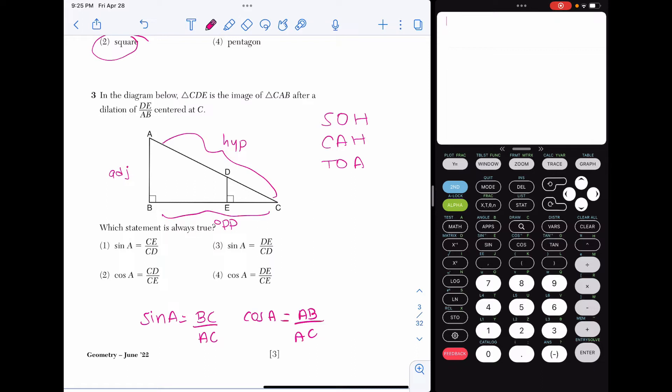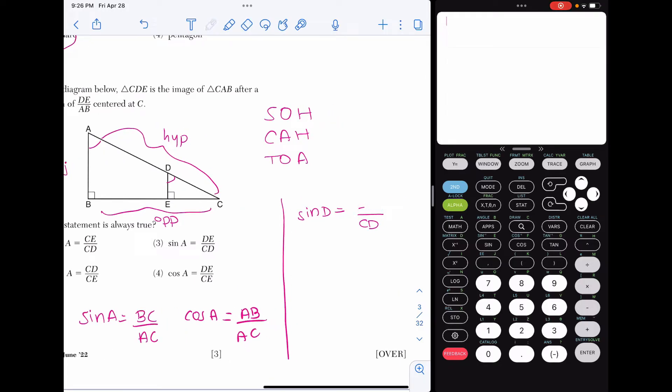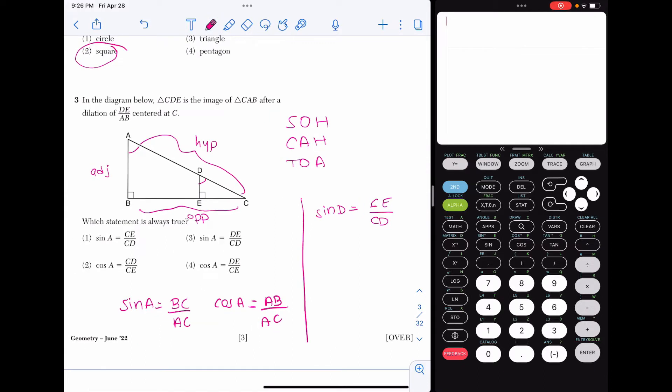So the reason is, is because this problem wants us to do an extra step and realize that angle A and angle D are going to be congruent because of the dilation. So whatever angle A is, angle D is going to be the same thing. So let's see if we can find those same two measurements, but with D. So the sine of D, the opposite side is EC or CE. And the hypotenuse is CD. And I'll actually just write this numerator here as CE so it matches our answer choices.